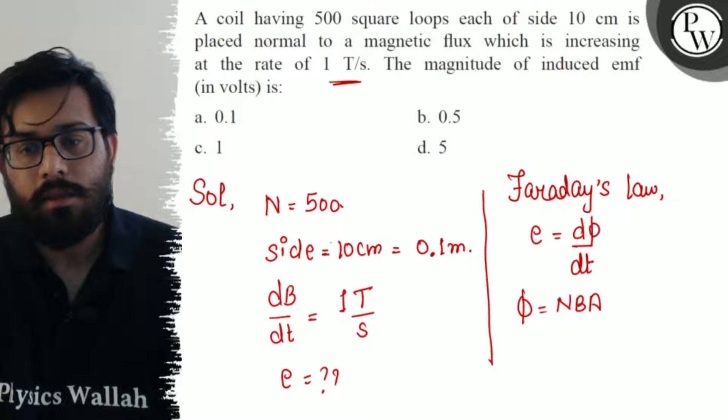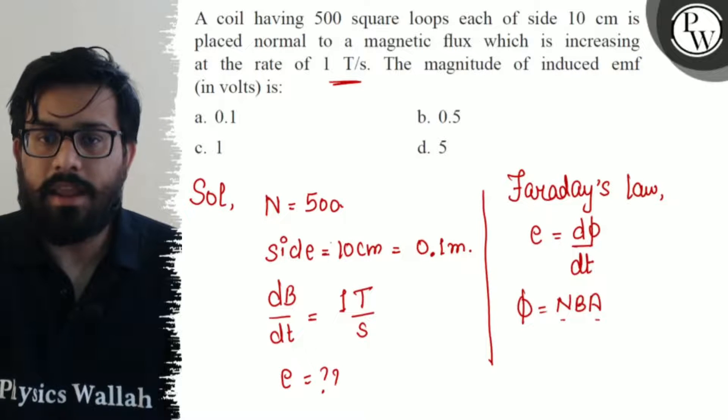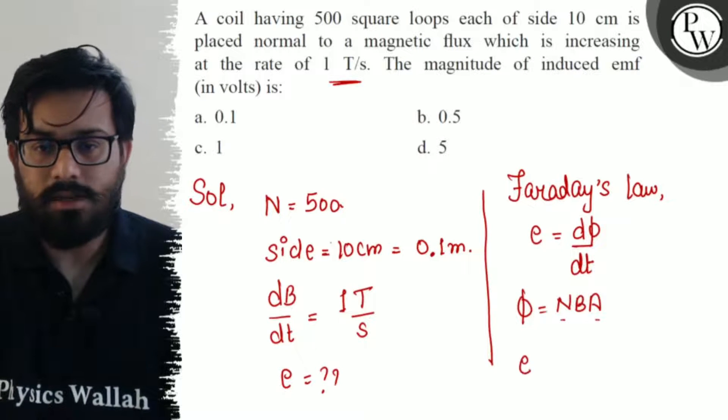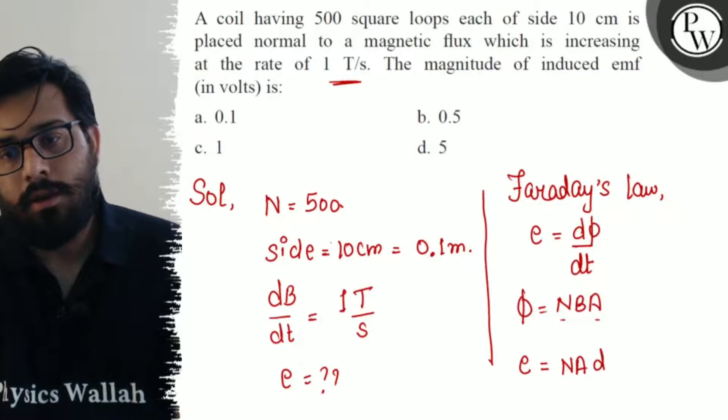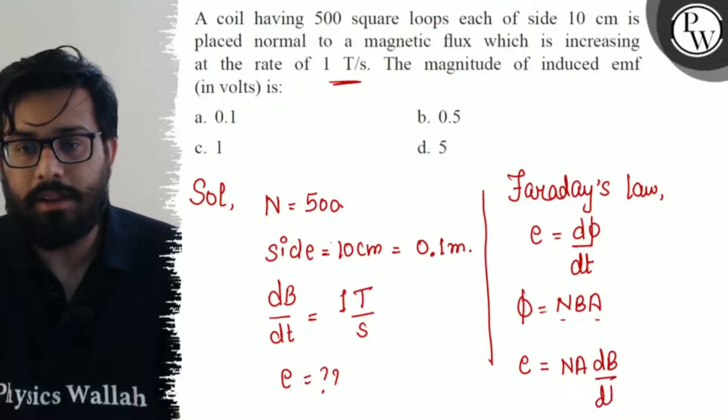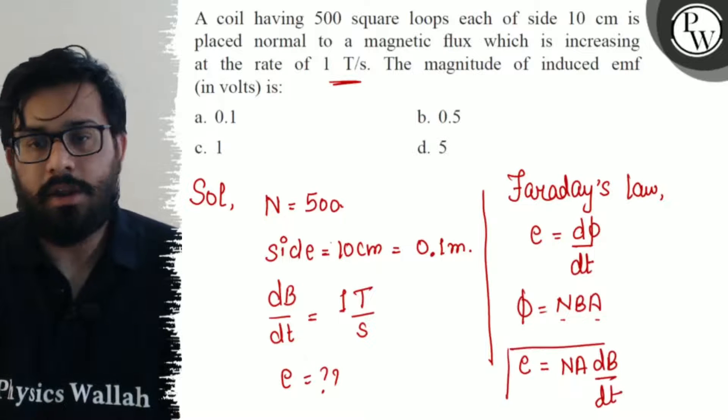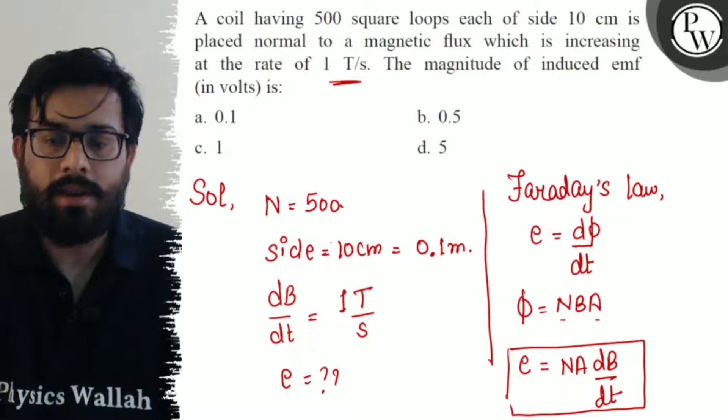Since N and A remain constant, EMF comes out to be N times A times dB/dt. This is your induced EMF. Just put the values and you will get your final answer.